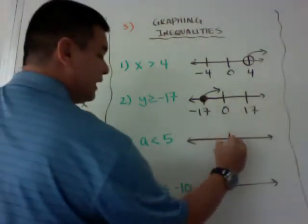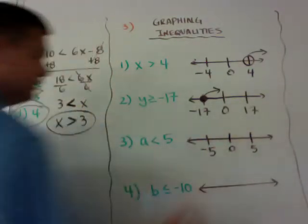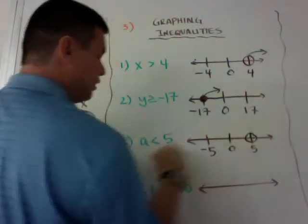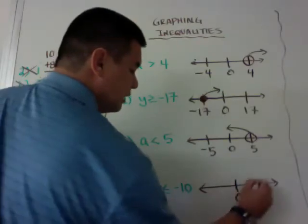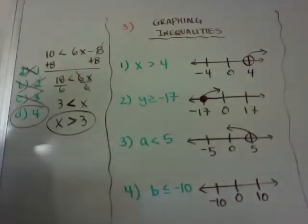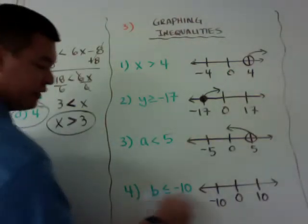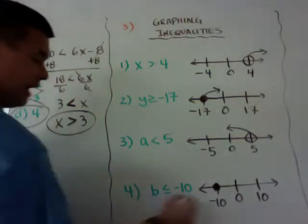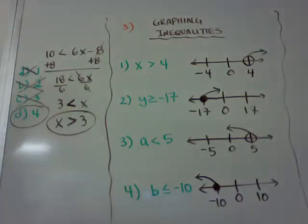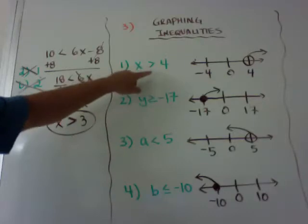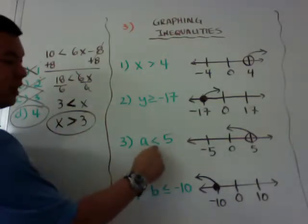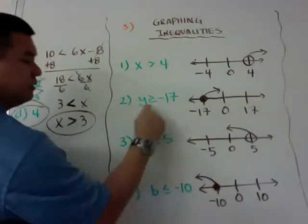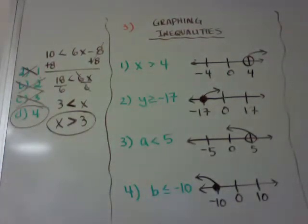For example, A is less than 5: put 0 in the middle, put 5 and negative 5. It's an open circle going to the left because it's less than. The next one, B is less than or equal to negative 10: put 0, 10, and negative 10. It's a closed circle on negative 10 because it's 'less than or equal to,' and the arrow goes to the left. To summarize: greater than or less than uses open circles; greater than or equal to, or less than or equal to, uses closed circles. If you think of the inequality symbol as a circle with a line underneath, the line means you fill it in.